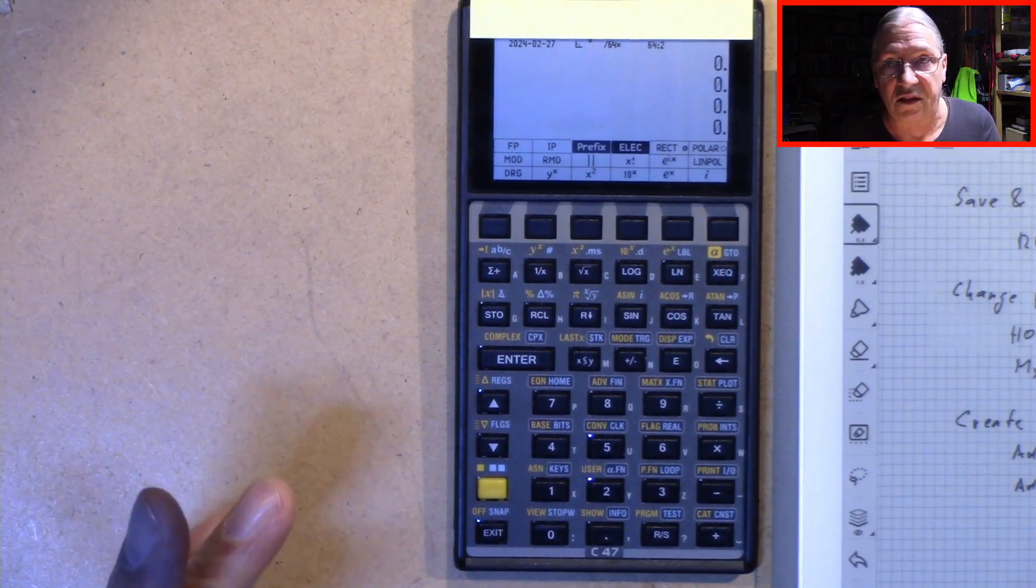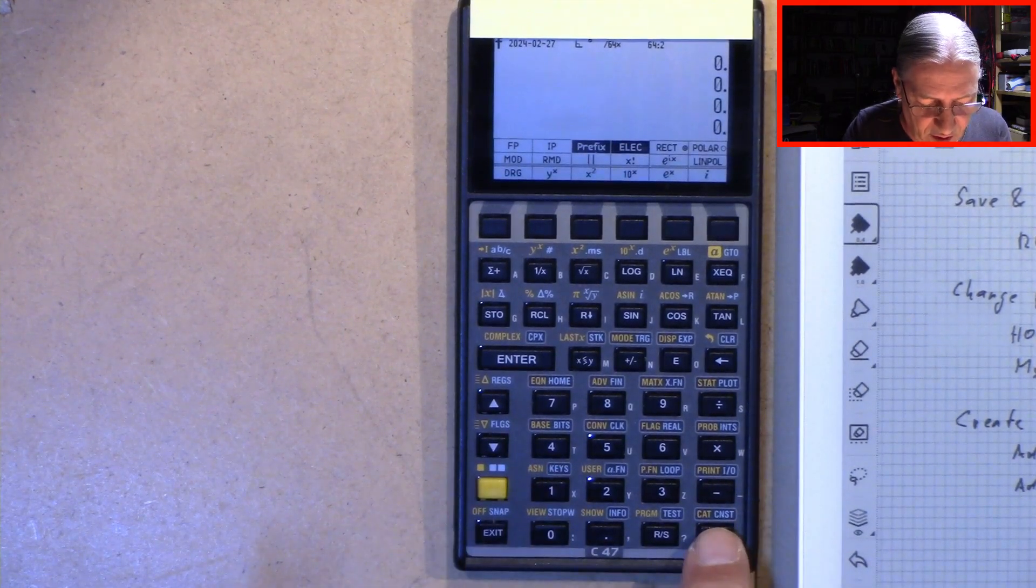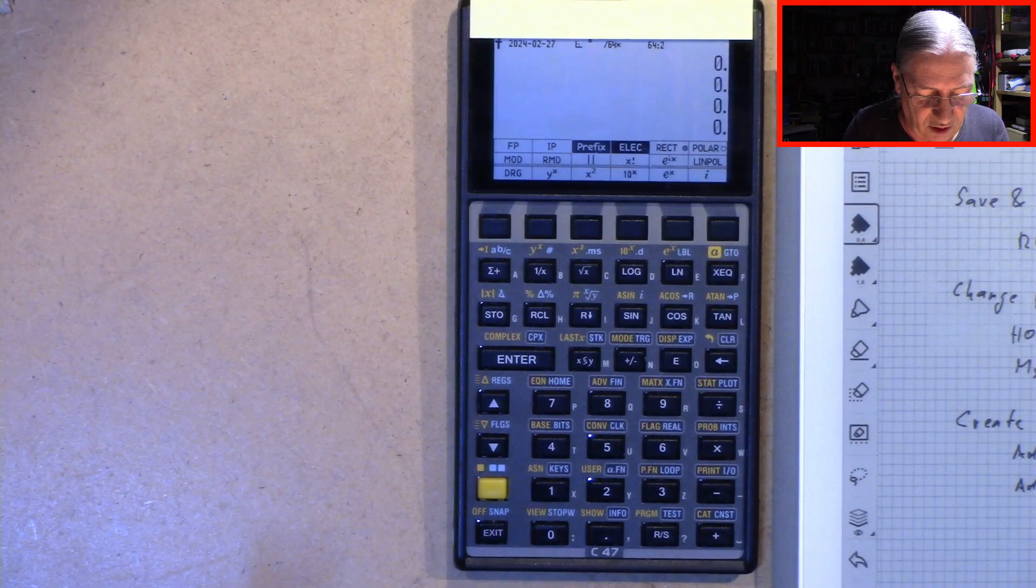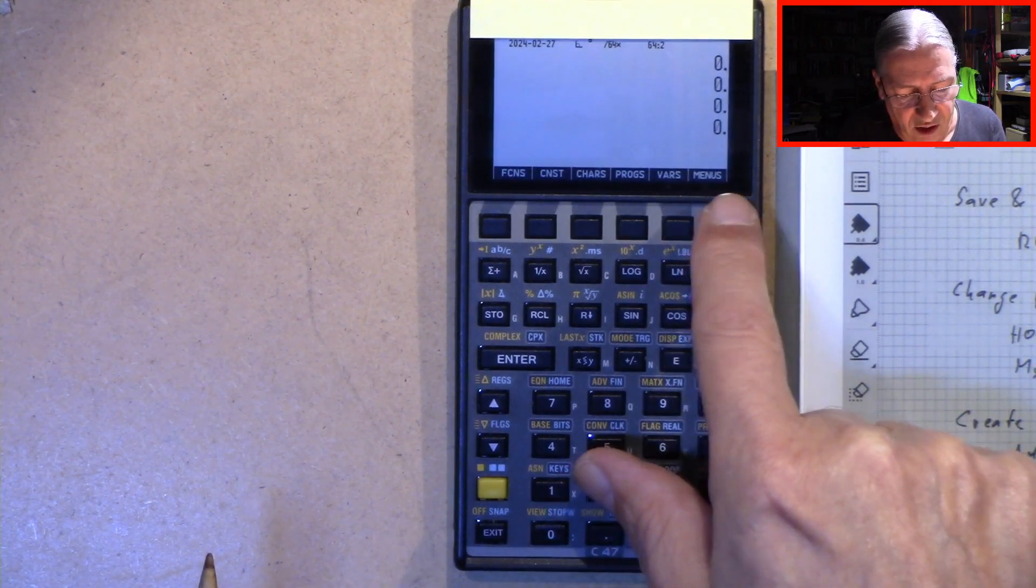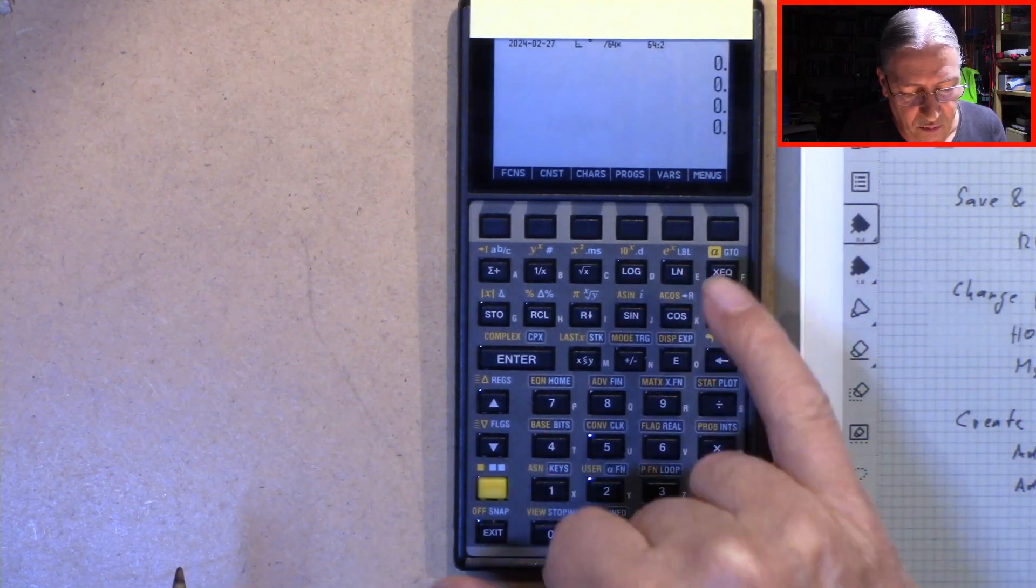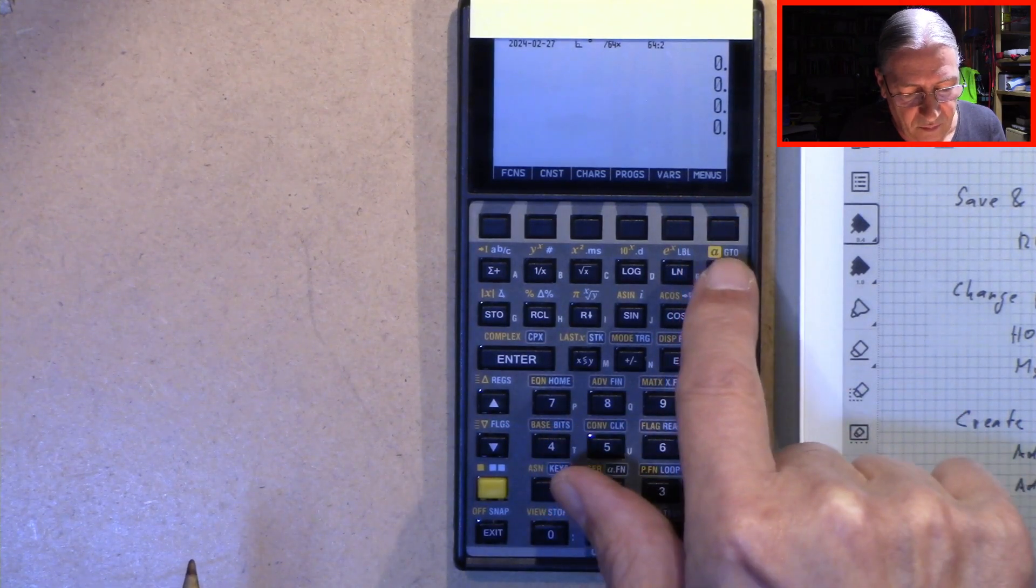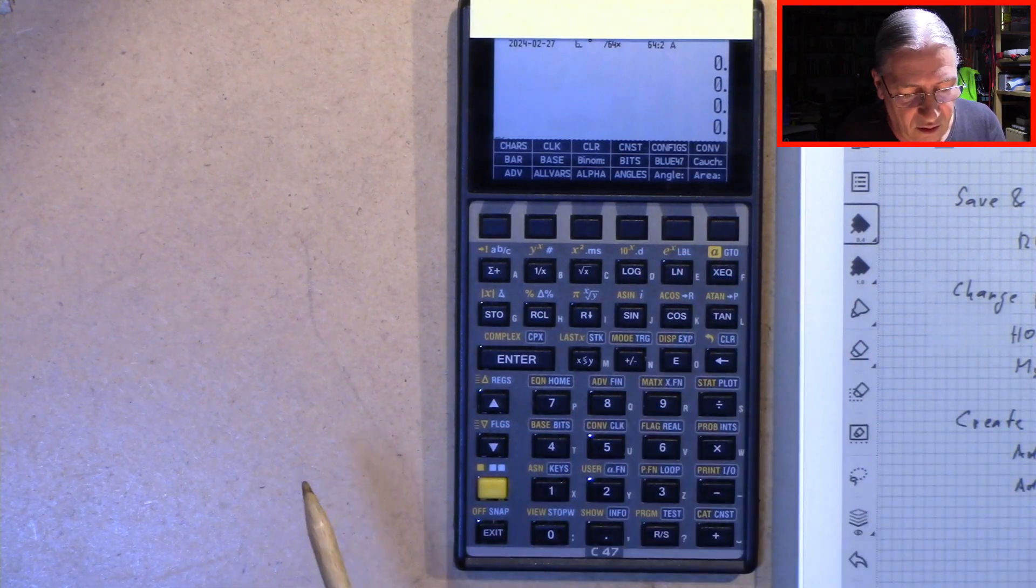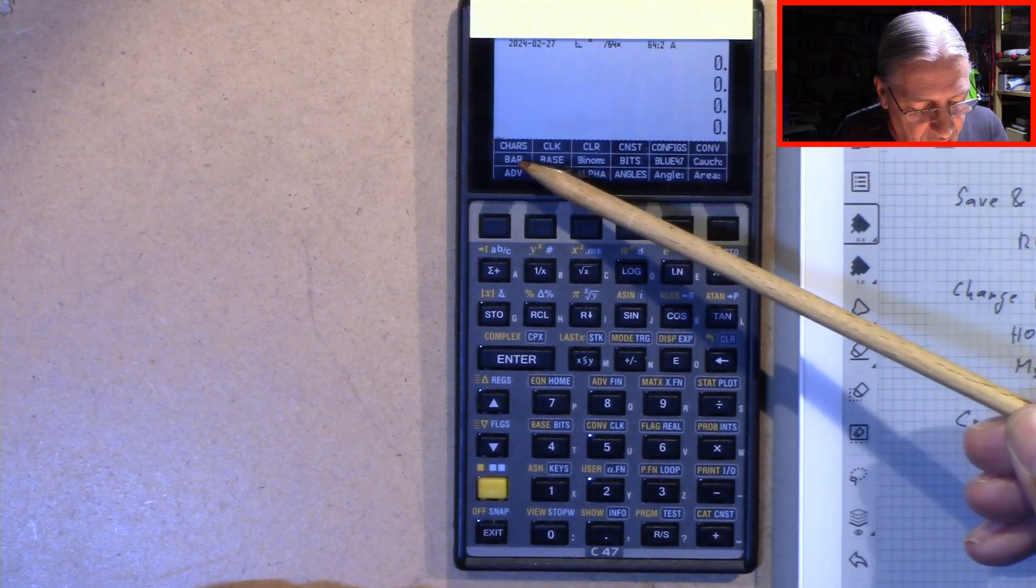But where is it? No problem at all. Shift and cat. Here we have the catalog. And here is a list of menus behind this soft key. So we press F6 to get this menu here.